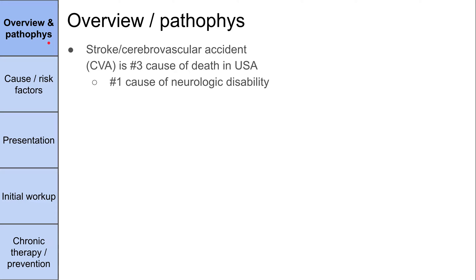First, an overview of strokes. Strokes are the number three leading cause of death in the United States. Number one is coronary vascular disease, number two is cancer, and number three is stroke. Strokes are also the number one cause of neurologic disability in the United States.